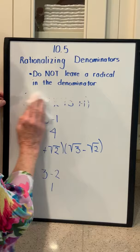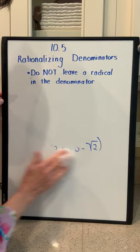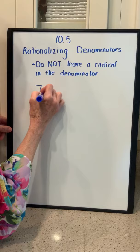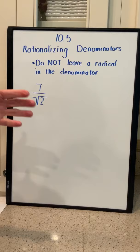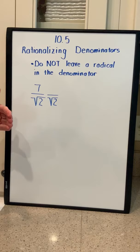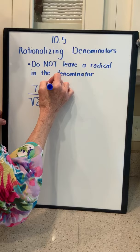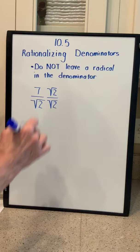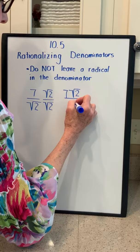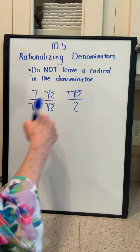I'm going to start off with some problems where we have just a single radical in the denominator and we're going to rationalize it. Rationalize means that we're going to make sure the denominators are a rational number, or that there's not a radical in the denominator. Our first problem is 7 over the square root of 2. Squares undo square roots, so if we want to get rid of this radical, we multiply the denominator by the square root of 2 — and we have to multiply the numerator by the square root of 2 as well. This gives 7 times the square root of 2 over 2.